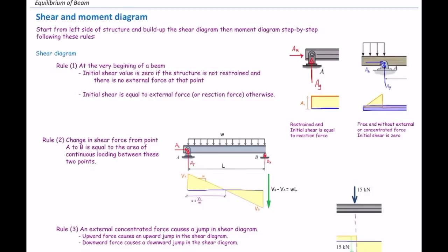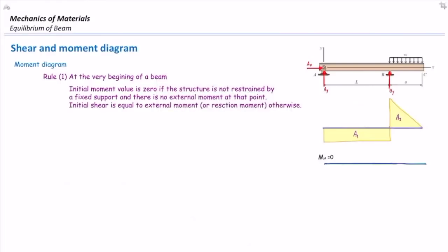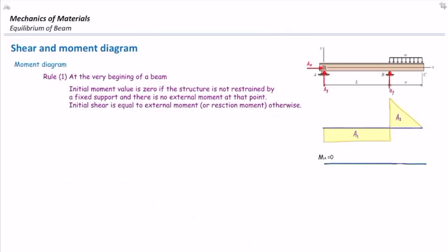We now define a similar set of rules for the moment diagram. Rule number one: the initial moment value is zero if the structure is not restrained by a fixed support and there is no external moment at that point. Note that it specifically refers to the fixed support. If restrained by a fixed support or if a moment acts at the left end, the initial moment equals that reaction moment. For a beam with a pin support at the left end, the initial moment value is zero.